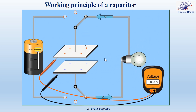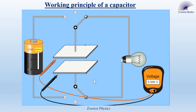We observe that the lamp glows for a certain time interval and then dies out. The potential difference between the two plates decreases to zero and the charge finally becomes zero, because the excess electrons on the lower plate transfer through the lamp to the upper plate. Finally, the charge on each plate becomes zero and the voltage becomes zero, so the lamp dies out. This phenomenon is called the discharging of the capacitor.